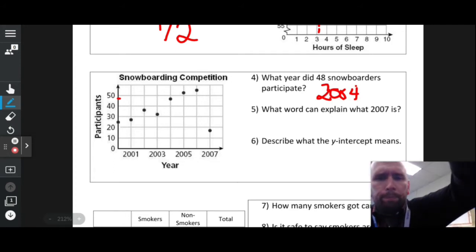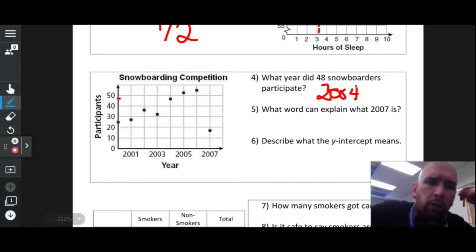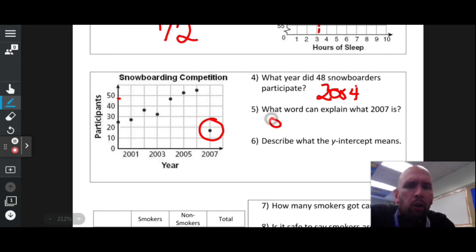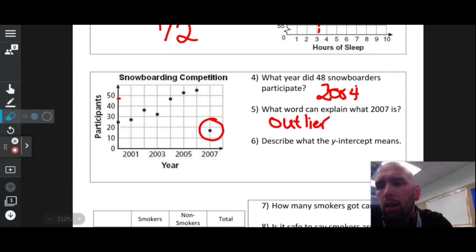What word can explain what 2007 is? See that dot way out there serving no purpose? That is an outlier. An outlier is a number or piece of data that doesn't seem to fit the rest of the data. This is a positive correlation, but for whatever reason that outlier, maybe it was super warm that day, maybe there was a blizzard, maybe there was a pandemic, who knows.